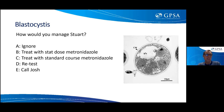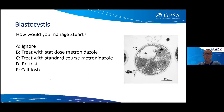Poll results show about 61% would ignore this result. Some would treat with a standard course of antibiotics, and there's some uncertainty — some would retest, some would call a friendly ID physician. The question is: what does blastocystis mean to us as primary care practitioners? Before addressing that, it's worth touching on multiplex stool PCR and why we should probably be using it more sparingly than people sometimes do.